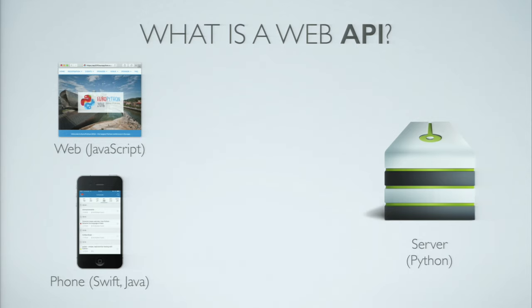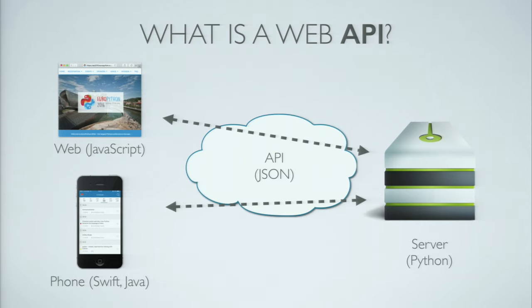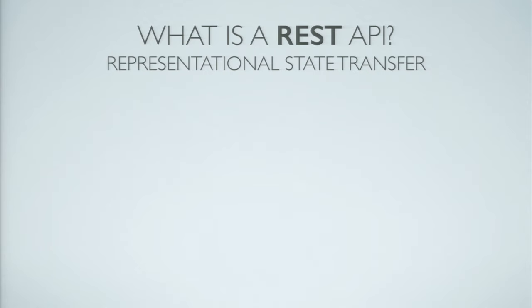Let's begin with the definition of what an API is. When we're building modern web applications, they usually have a component running in the browser — if it's interactive, it's usually powered by JavaScript. We may have a client on the mobile space, on a phone or tablet, and then of course we have our server with all the data and databases. In order to get these things to talk to one another, we need a way for them to communicate, which is the API.